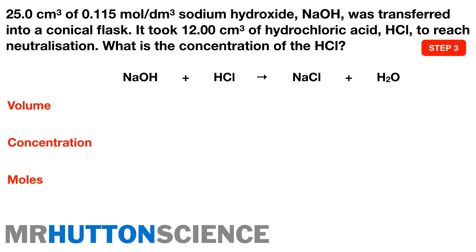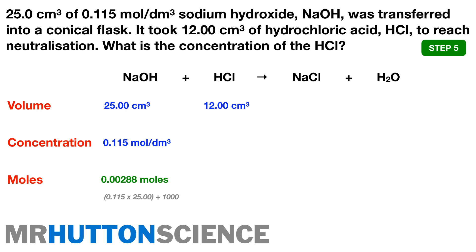Step 4 — fill in information from the question: 25 cm³ of NaOH with a concentration of 0.115 mol/dm³, and 12 cm³ of HCl used. Step 5 — calculate moles of the known solution: moles = 0.115 × 25 ÷ 1000 (dividing by 1000 to convert cm³ to dm³). Step 6 — the molar ratio is 1:1, so the moles of HCl equal the moles of NaOH, making this step very straightforward.